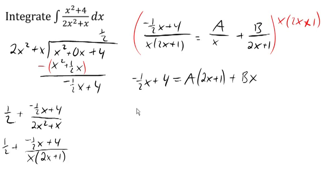Notice that if x was 0, this term would go away. So I'm going to let x equal 0. Then on the left we get 0 times 1 half is 0, plus 4 is 4. This term is 0. Plugging in 0 here, 2 times 0 plus 1 is 1, 1 times A. A is 4.